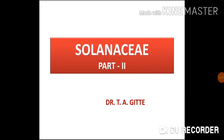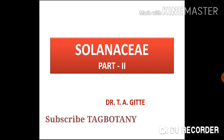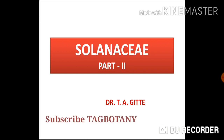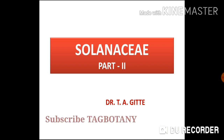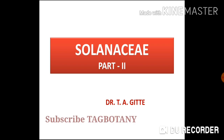Hello guys, in my previous lecture I told you about family Solanaceae Part 1, in which we studied the systematic position, classification according to Bentham and Hooker's system, general characters including geographical distribution, habit, root, stem, leaves, and floral characters like inflorescence, flower, and fruit including floral diagram and floral formulae.